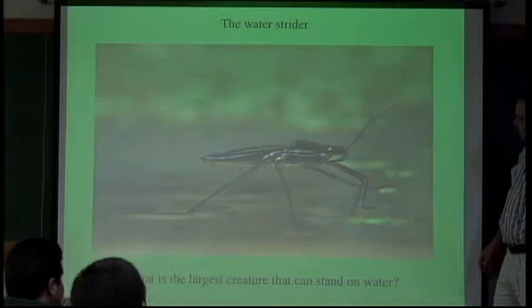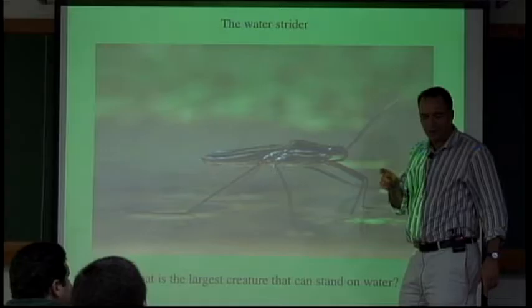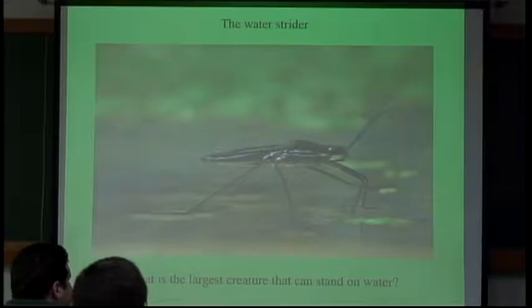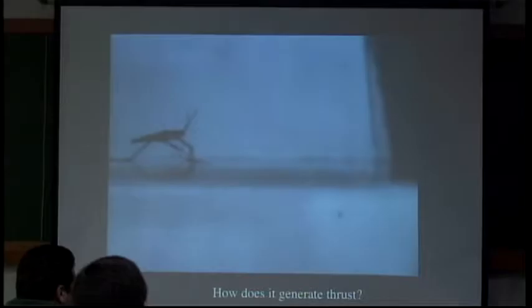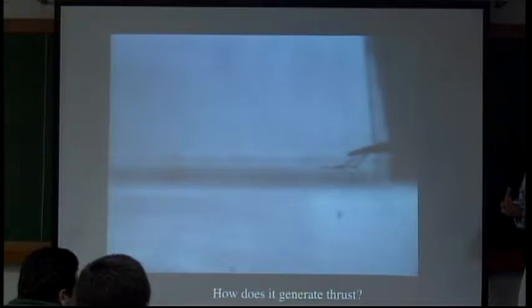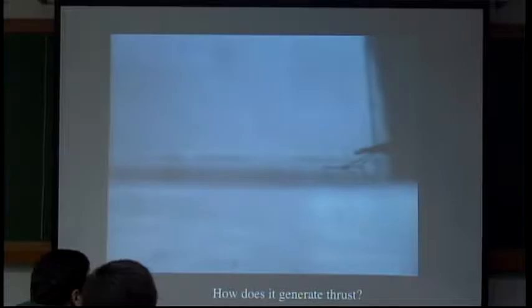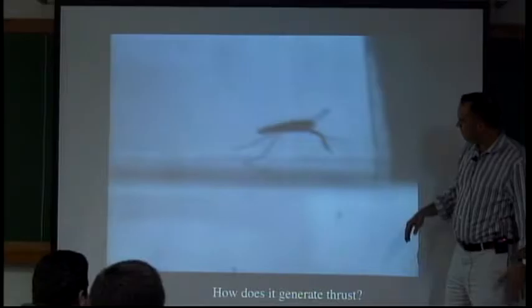If we now look at water walking creatures — these things are about a centimeter long — why is it that we don't see goats or donkeys walking across water? What is the largest creature that can walk on water? How do we rationalize this? These creatures are water repellent: both the surface chemistry and texture is such that water doesn't impregnate into their surface. These things are actually slightly heavier than water, so if they get wet they will sink to the bottom — but because of their water repellent coat, they don't.